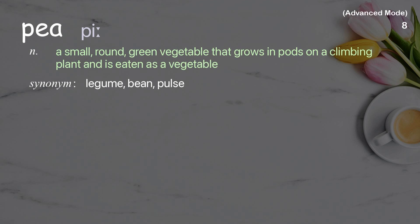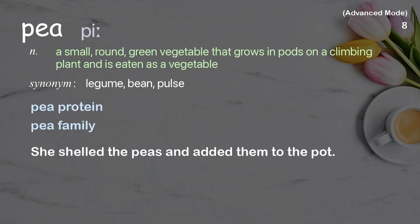Pea: a small, round, green vegetable that grows in pods on a climbing plant and is eaten as a vegetable. Examples: pea protein, pea family. She shelled the peas and added them to the pot.